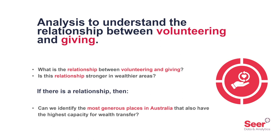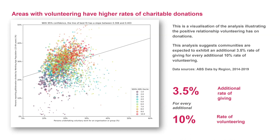Each of the speckly dots on that chart represents a community — an SA2, essentially a suburb from all around Australia — with the dot size scaled to the population in that community. The location on the horizontal axis is the rate of volunteering — specifically the ABS definition of 'persons undertaking voluntary work for an organisational group.' The vertical axis is the rate of giving, where people are reporting taxable donations in their tax returns, normalised against the working population for that area. We were looking for a relationship between these two things. The strongest possible relationship would be all dots clustered neatly around the diagonal line from bottom left to top right.